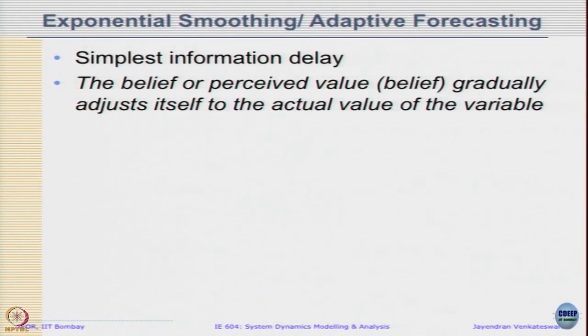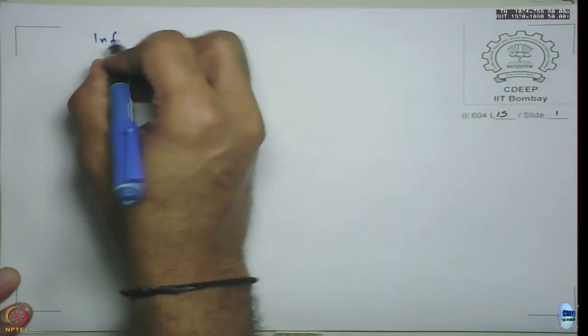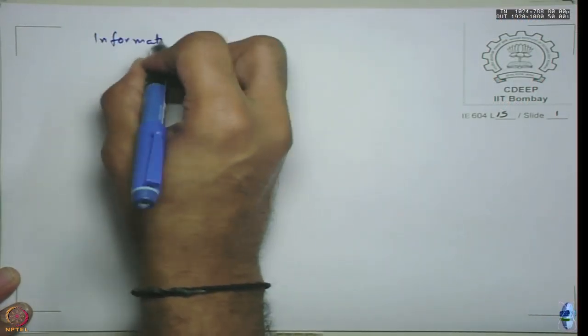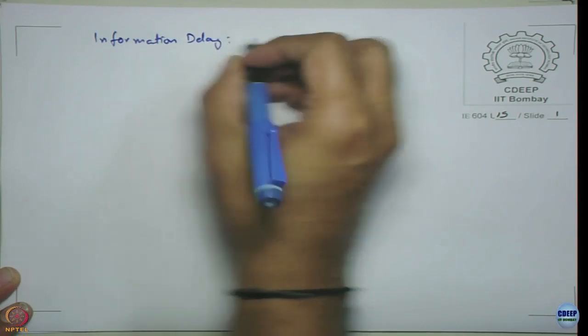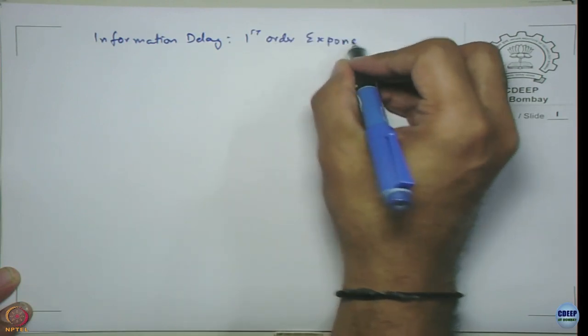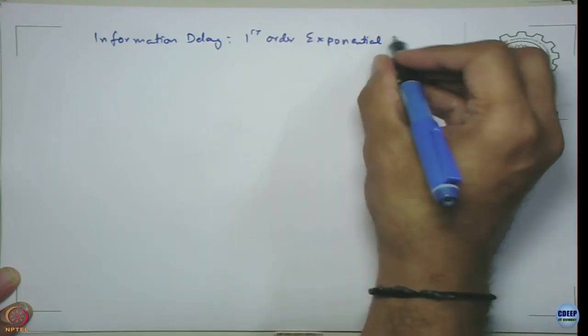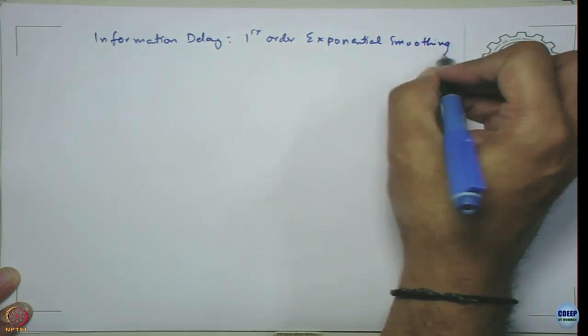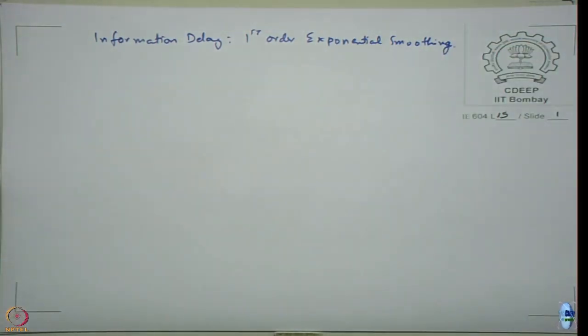There is a belief or perceived value that gradually adjusts itself to the actual value of the variable. Once a variable changes and holds constant, after some time it reaches that particular value. So let us see what is the basic stock flow diagram of first order exponential smoothing.